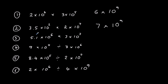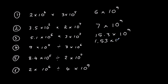Third one: 5.1 times 3 is 15.3, and 10 to the power of 6 times 10 to the power of 7 is 10 to the power of 13. We can't have 15.3, so that's 1.53 times 10, times 10 to the power of 9, which gives 1.53 times 10 to the power of 10.